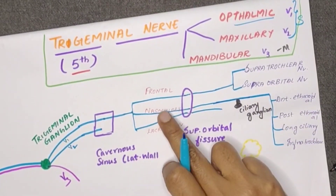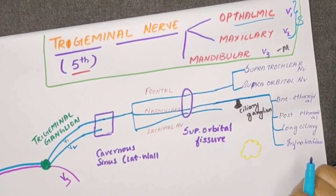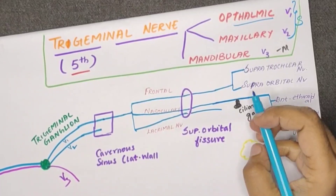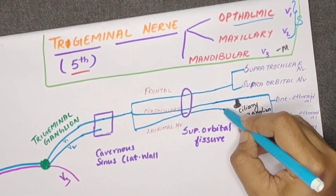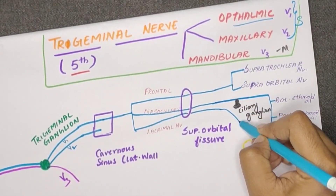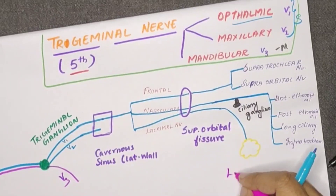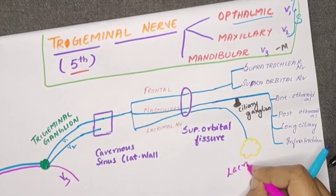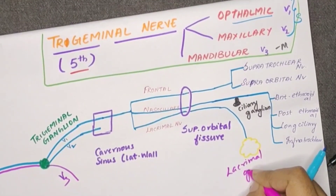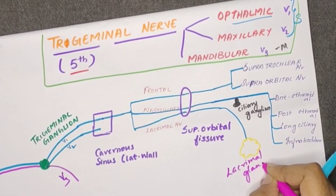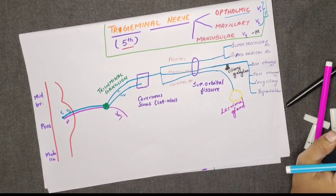The third branch is the lacrimal nerve. The lacrimal nerve is supplied to the lacrimal gland.